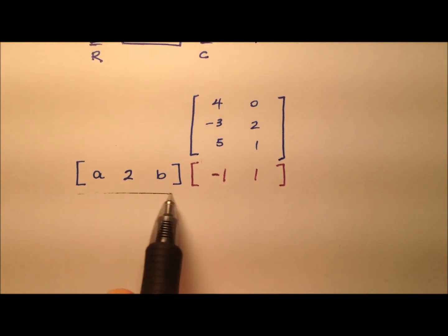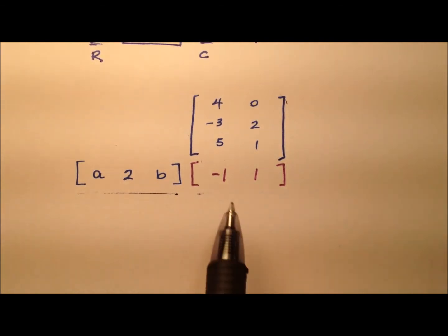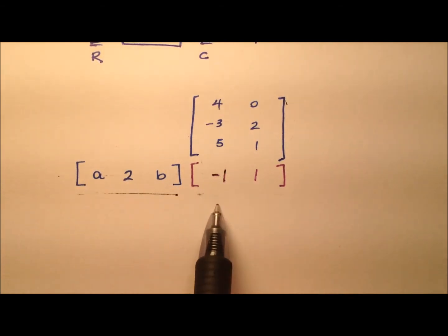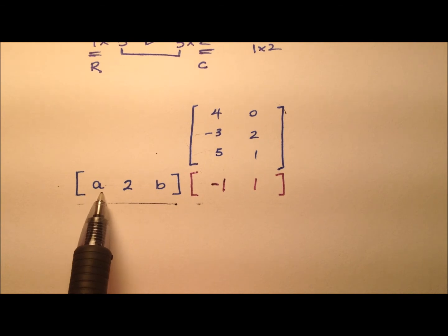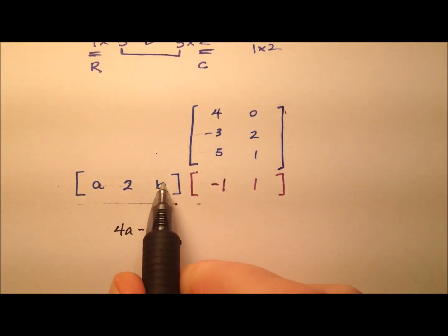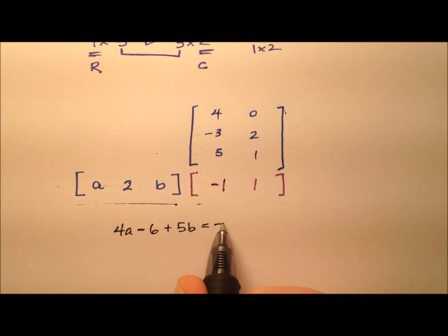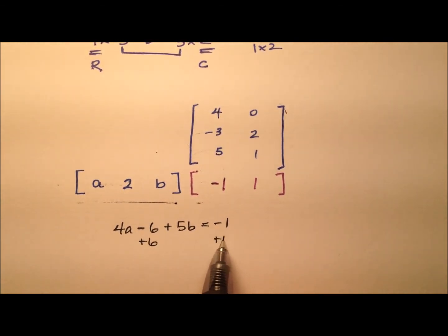So this one by three was being multiplied by this three by two, and here's our product matrix here. And so this negative one came from this row with this column, where we were multiplying these consecutive terms and then adding all those products together. So first term was A times four, so 4A, and then coming across and down, two times negative three is negative six. And then finally, B times five is 5B. We add all those up and we got this entry, which was negative one. So if I go ahead and add six to both sides, it looks like 4A plus 5B equals five.